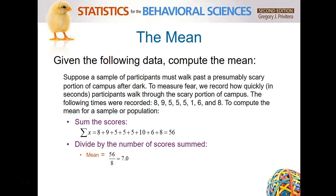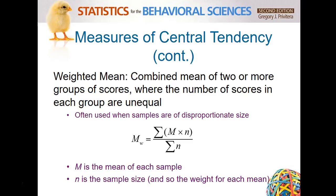Given the following data: suppose a sample of participants must walk past a scary portion of campus after dark. To measure fear, we record how quickly they walk through that portion of campus. This is field research. The following times are recorded: 8, 9, 5, 5, 8, and so on. To compute the mean, we add them all up and get 56 — that's the sum of all scores. Divide by 8 scores, and our mean is 7.0. On average, it takes everybody 7 seconds to walk past that scary portion of campus.